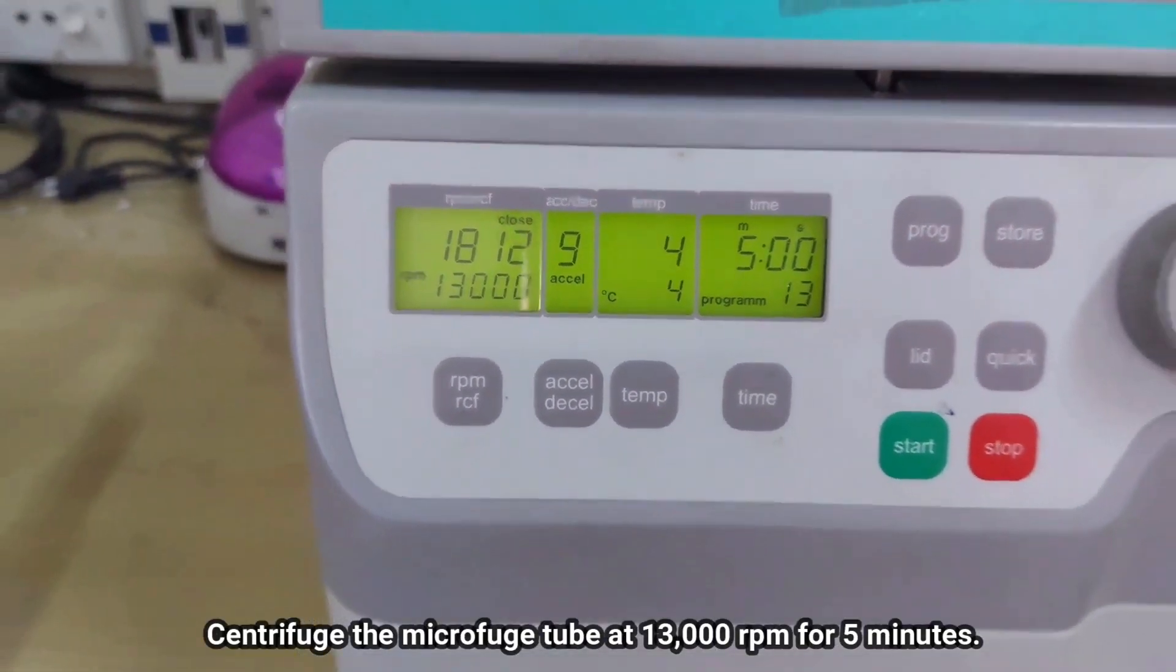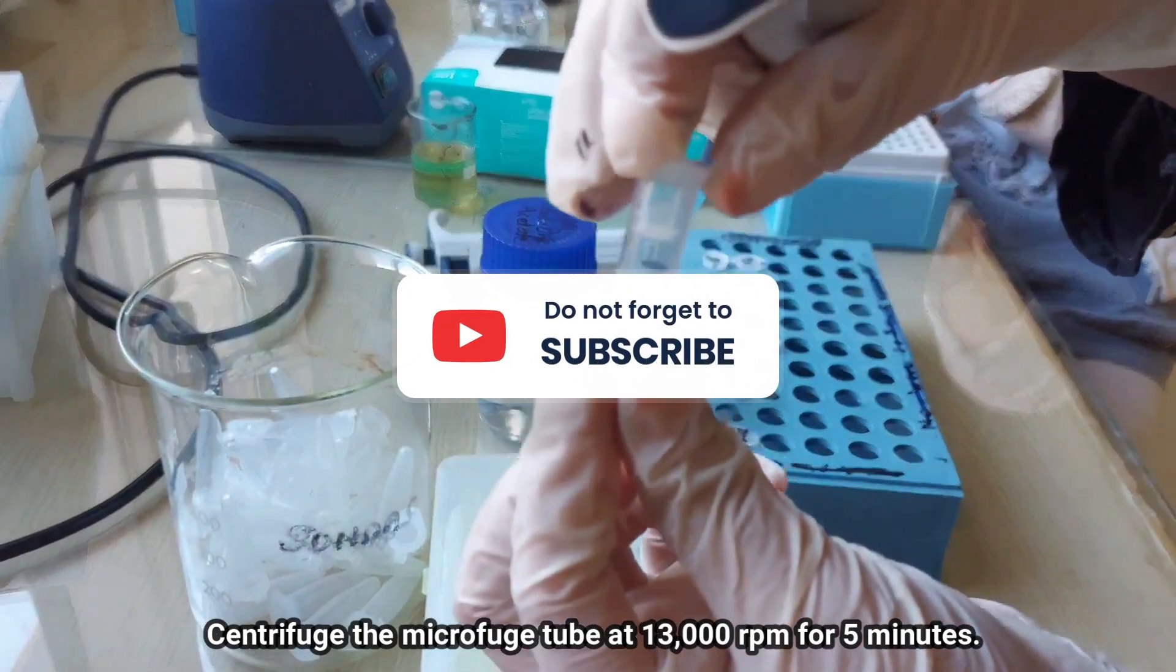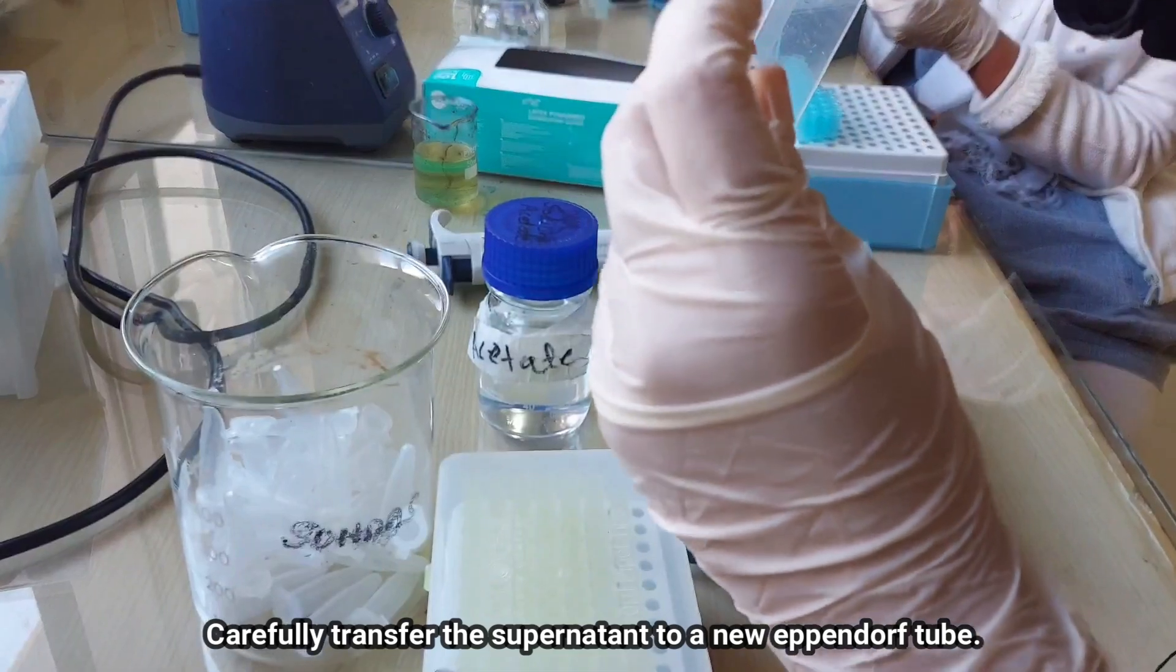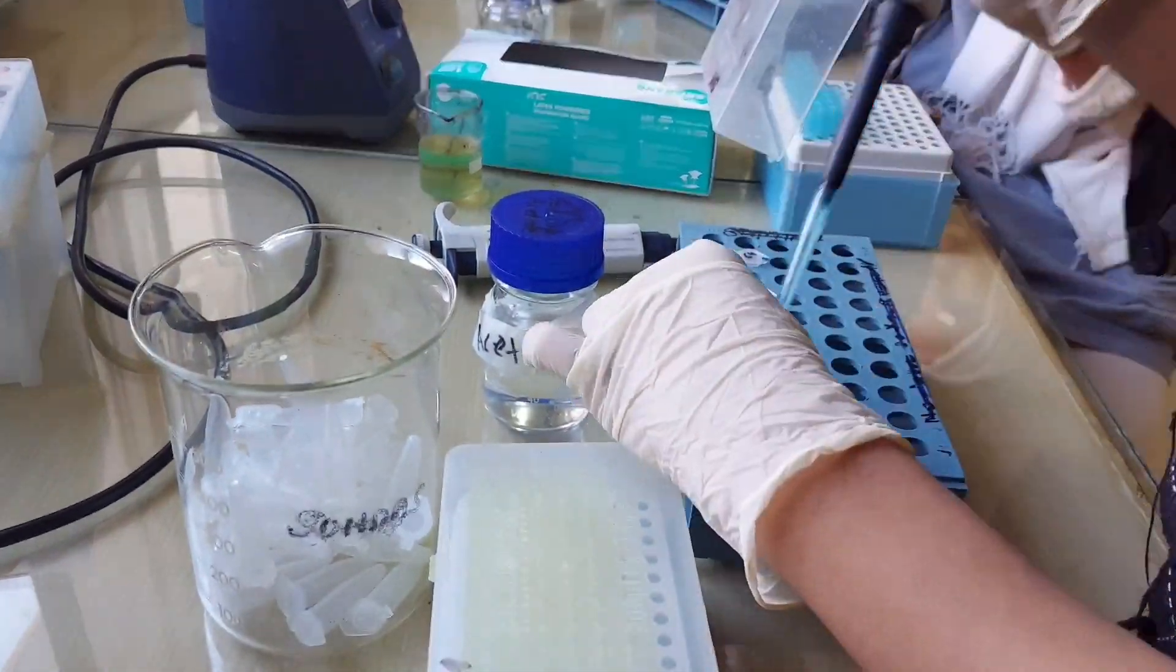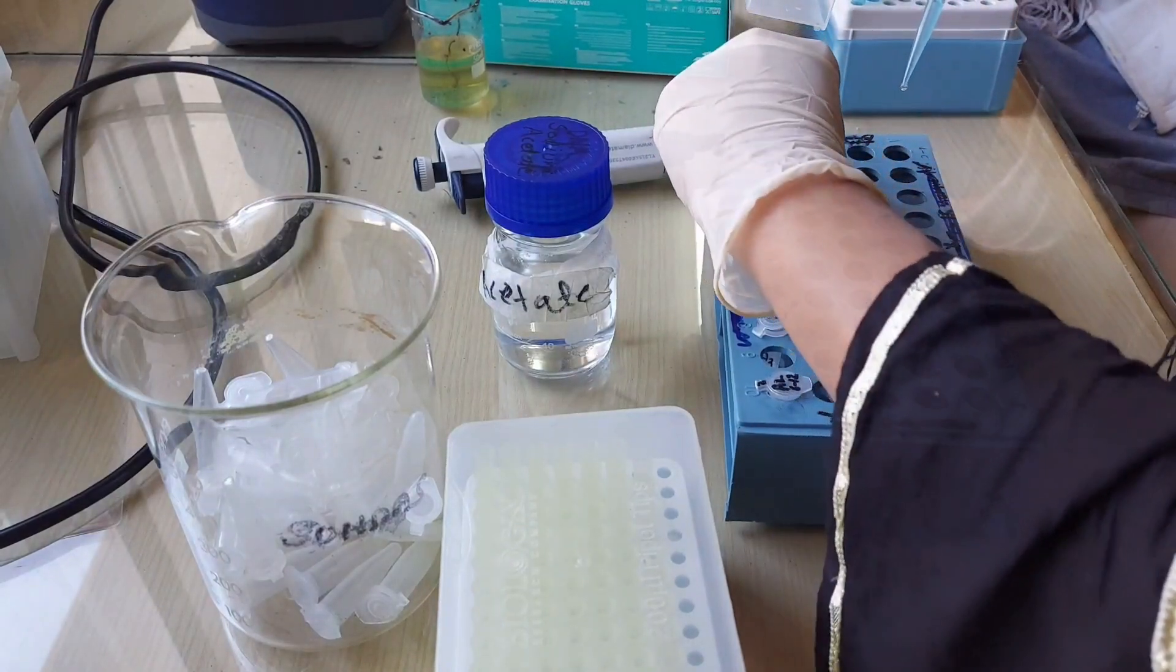Centrifuge the tube at 13,000 RPM for 5 minutes. After centrifugation, carefully transfer the supernatant to a new eppendorf. And as I have told you before, leave a bit of the supernatant behind. That is only because you don't pick up the contaminated part, which is the organic phase.